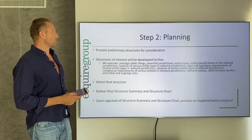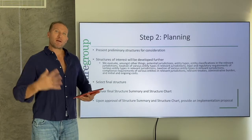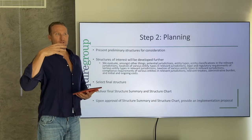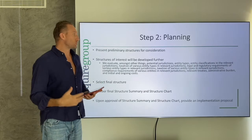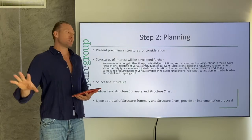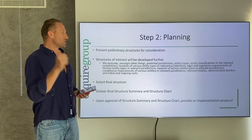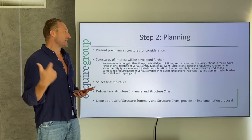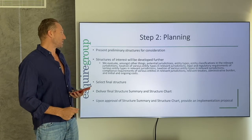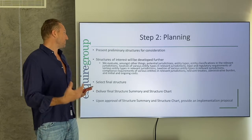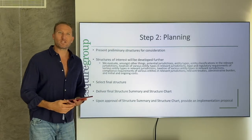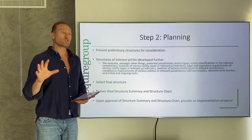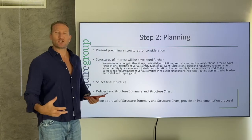Determining the jurisdiction is also super important. Once we've come up with a preliminary structure, we present that to the client for discussion. For structures of most interest, we vet those further — we evaluate the potential jurisdictions, the entity types, the entity classifications of the relevant jurisdictions, how the entities are taxed, the legal and regulatory requirements, compliance requirements, relevant tax treaties, the administrative burden, initial and ongoing costs, the beneficial owner register situation, and whether there are economic substance regulations. We look at all of that so we can give the client a full picture to make an educated decision on what is best for them.